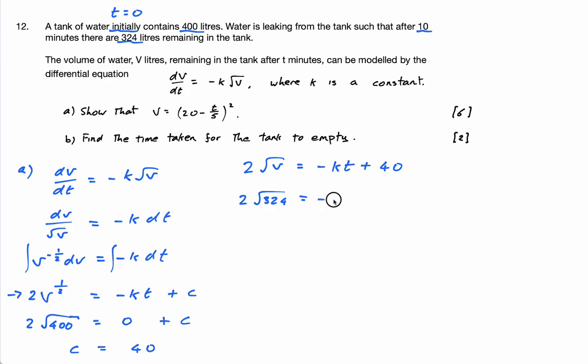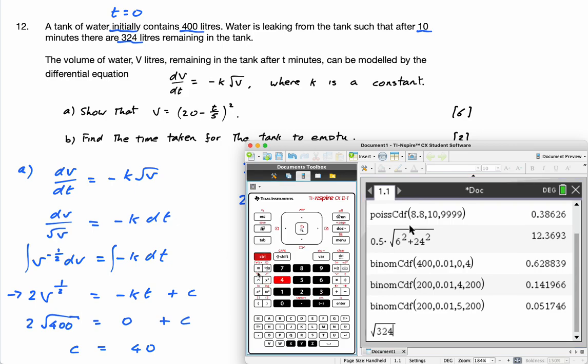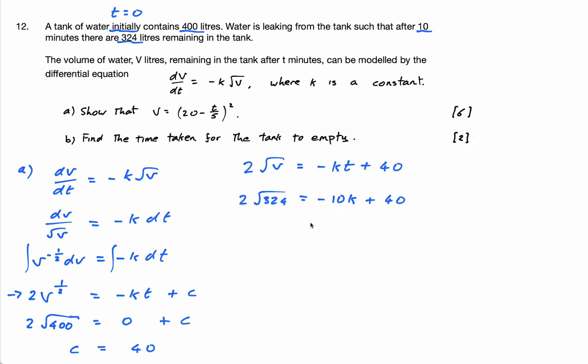So it's minus 10K, if you like. Plus 40. The square root of 324. I probably should know that. 324 is 18. 2 times 18 is 36. 36 equals minus 10K plus 40. 10K equals 40 minus 36, which is 4. K is equal to 4 over 10 or 2 over 5.